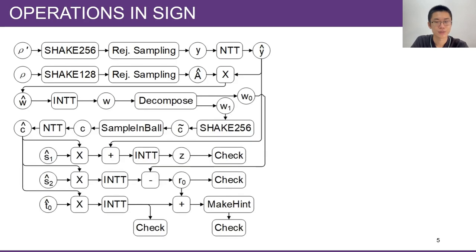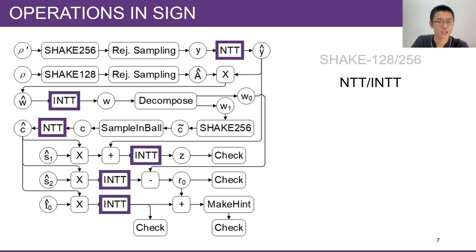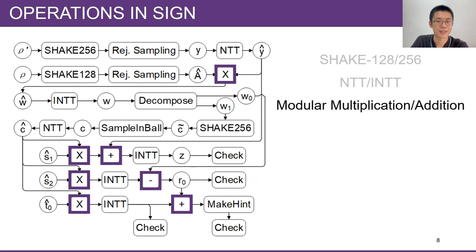This diagram shows the process of signature generation loop, where several kinds of operations are used. SHAKE-128 and 256 are used for randomness generation and hashing. NTT, short for Number Theoretic Transform and its inverse transform iNTT, are used to accelerate the multiplication of polynomials. Modular multiplication and additions are used several times.